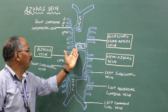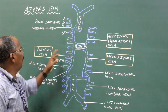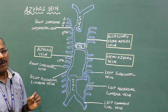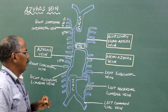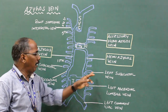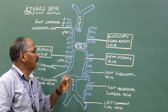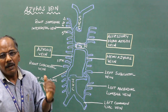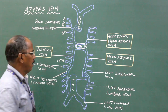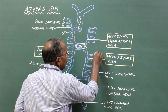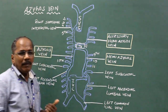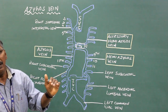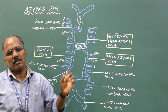The hemi-azygous vein turns to the right and terminates into the azygous vein. Tributaries: 1, left subcostal vein; 2, left ascending lumbar vein; 3, lower three left posterior intercostal veins — that is, the 9th, 10th, and 11th left posterior intercostal veins.